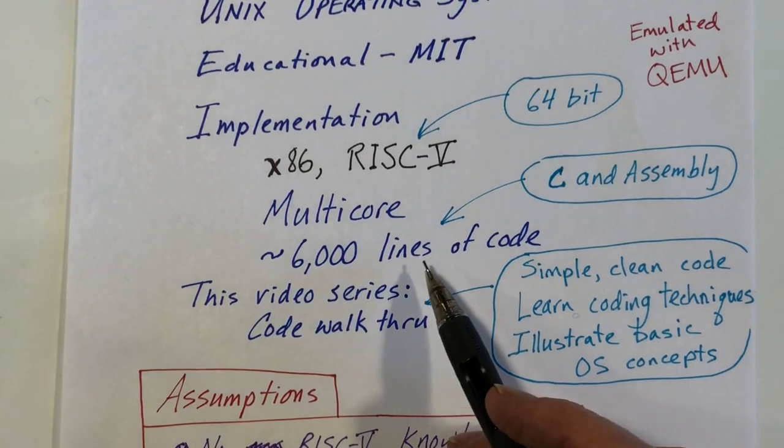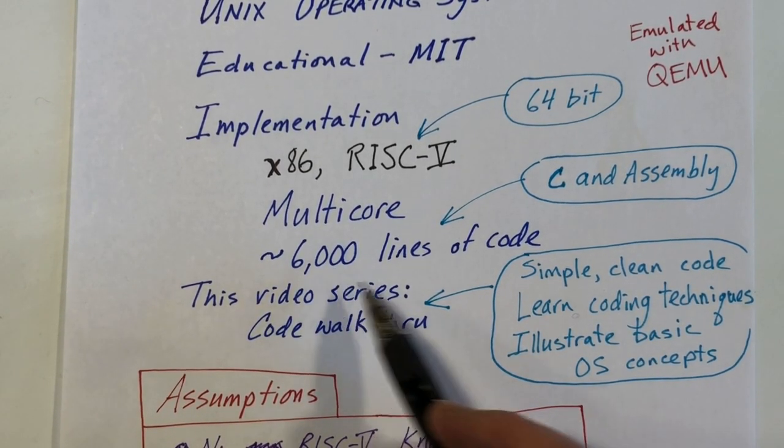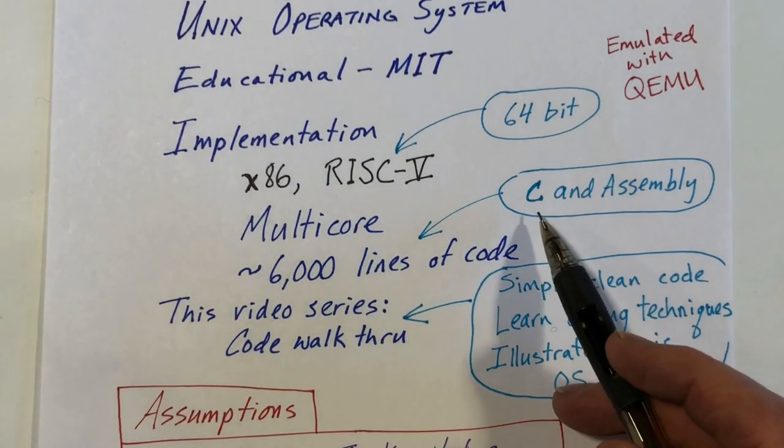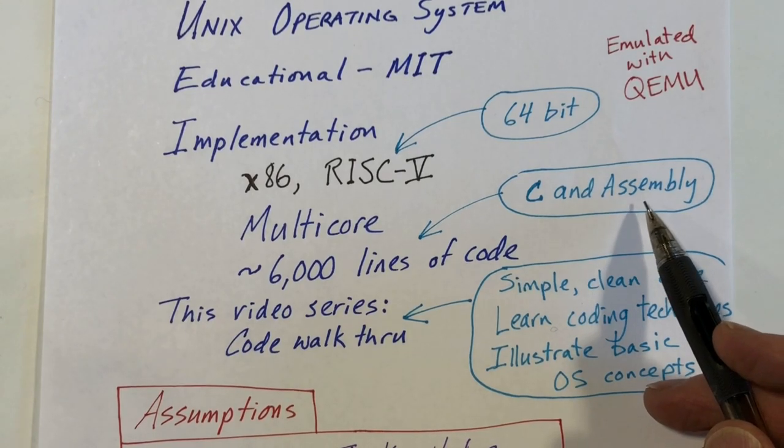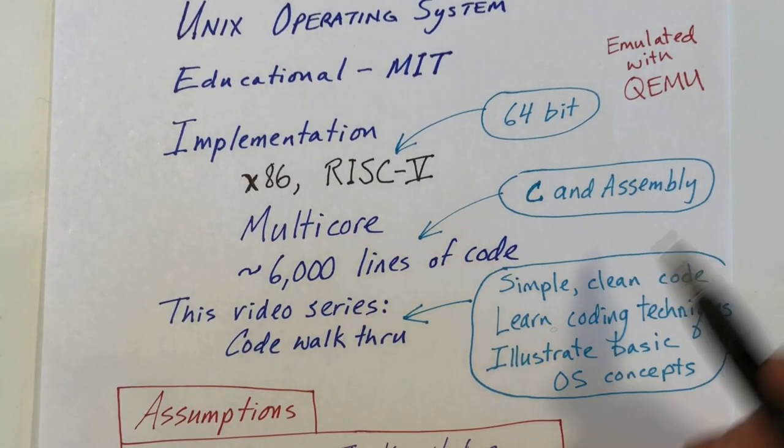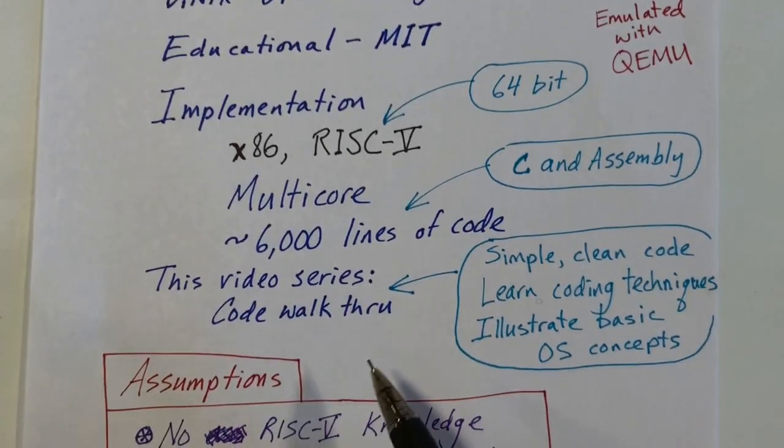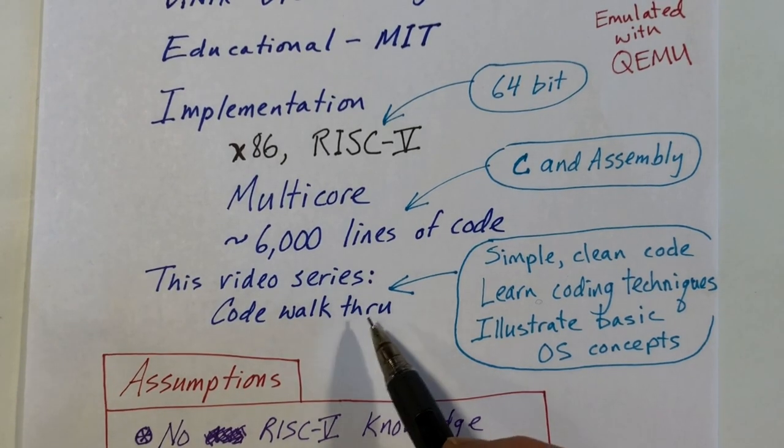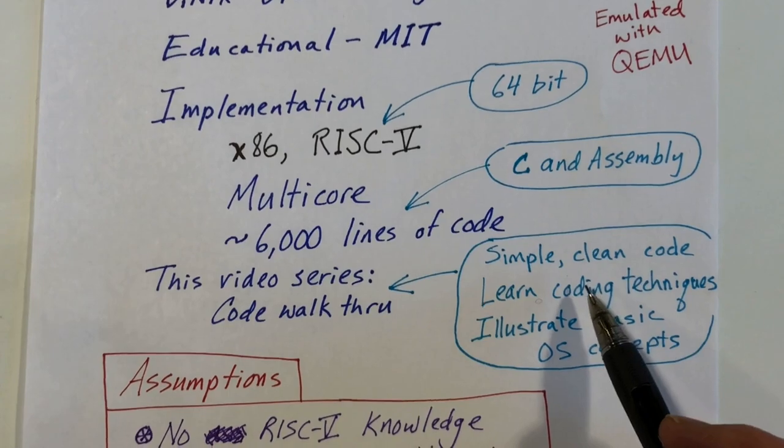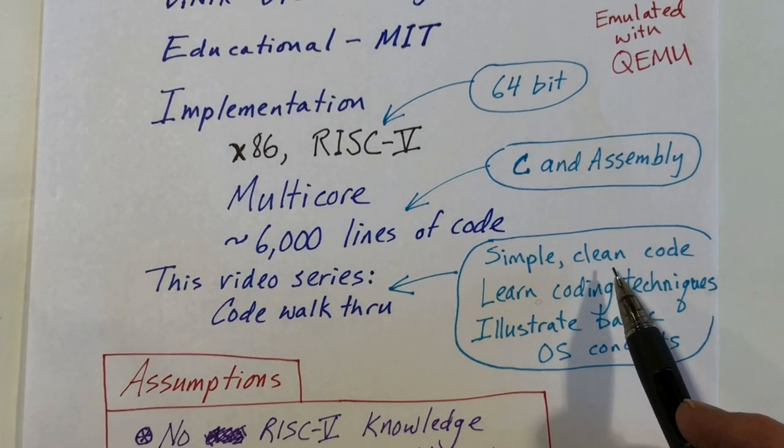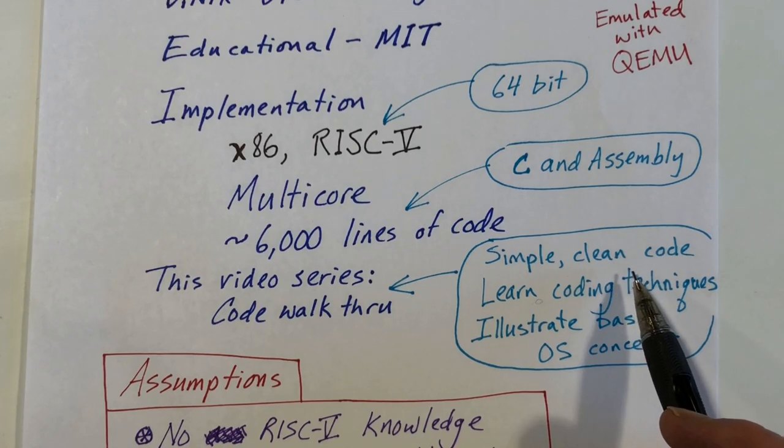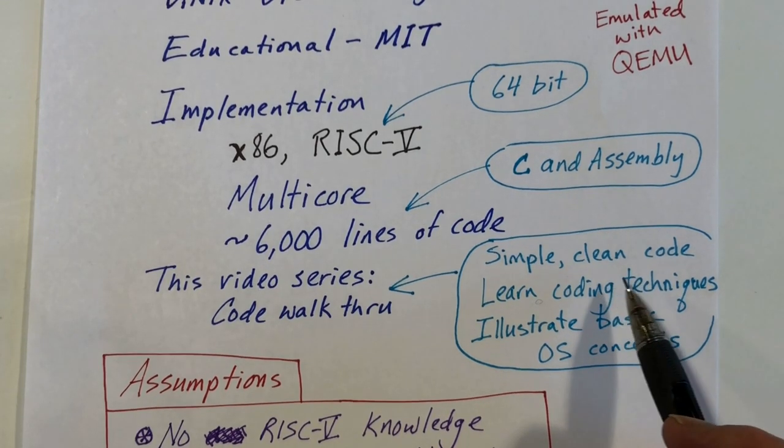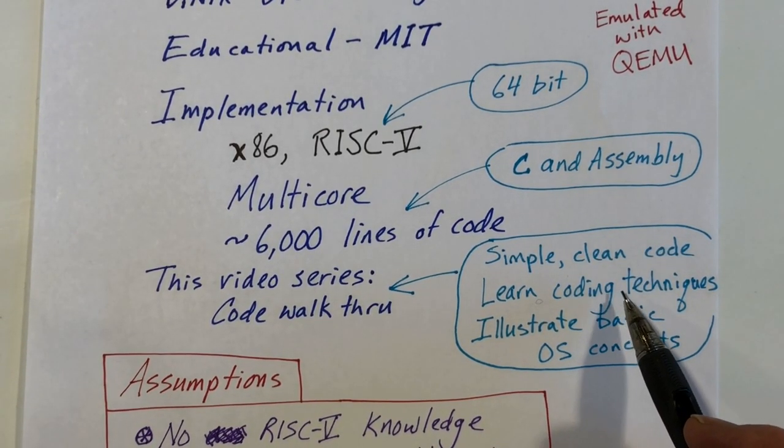As I said, it's short and very sweet. It's only about 6,000 lines of code. Most of it is written in the C programming language with maybe about 300 lines in assembly language. In this video series, what I'm going to do is do a walkthrough of more or less all of the code to give you an idea of what's going on with it. The code is very simple and well written and clean code. And I've read a lot of C code and written a lot of C code, and I'm still learning new coding techniques. And I think this is an example that is worth studying.